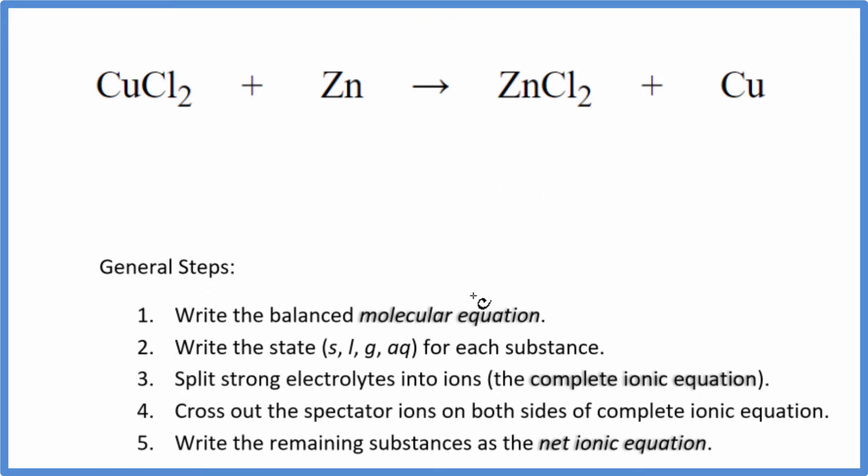First thing we need to do with these net ionic equations, we need to balance the molecular equation. So when I look at this, I have copper here, copper here, zinc, zinc, two chlorines. We're done. It's already balanced, so that's kind of nice.